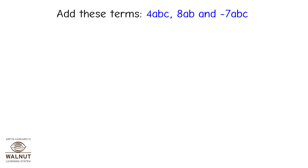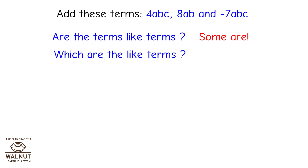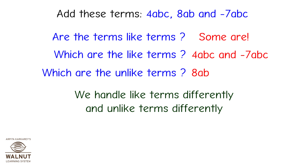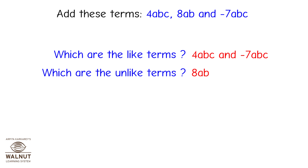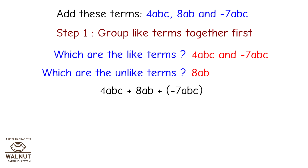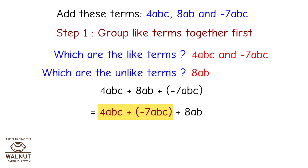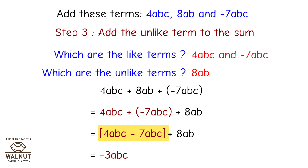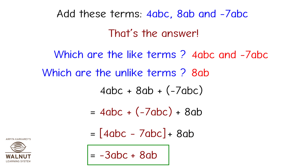Add 4abc, 8ab, and -7abc. Are the terms like terms? Some are. The like terms are 4abc and -7abc; the unlike term is 8ab. Step 1: group like terms together — (4abc - 7abc) + 8ab. Step 2: add the like terms, which gives -3abc. Step 3: add the unlike term to the sum. The answer is -3abc + 8ab.